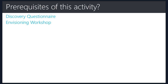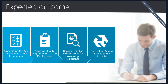The prerequisites for this activity are not a lot — this is meant to happen very early in the deployment. A couple of useful things prior to running this activity are ensuring that the discovery questionnaire and the envisioning workshop are completed. That way you have an idea of the scope of the deployment and know what areas to focus on operationalizing. By the end of this training, you will be familiar with understanding the key concepts of the end user experience, the quality requirements of the deployment, what tools and processes are available, and a sense of the service management activities needed to maintain a healthy deployment.